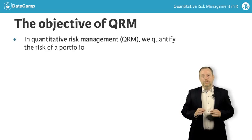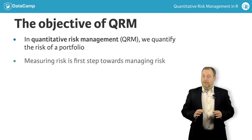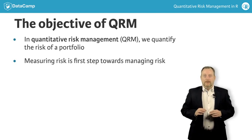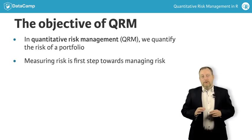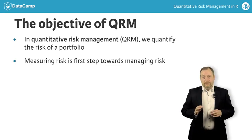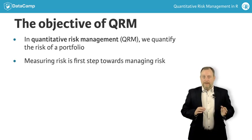In QRM, the goal is to quantify the risk of a portfolio of risky assets. Measuring the risk is the first step towards managing the risk. We consider the typical portfolios of risky assets held by banks and insurance companies, and sometimes also their liabilities. But the ideas apply equally to the portfolio of a private investor, like you or me.